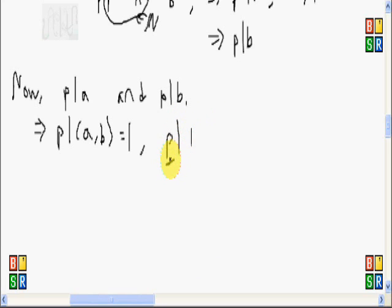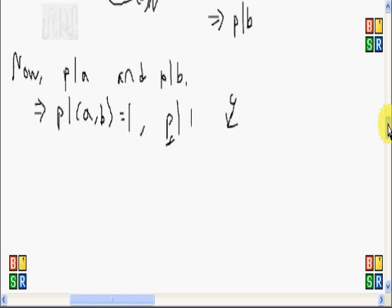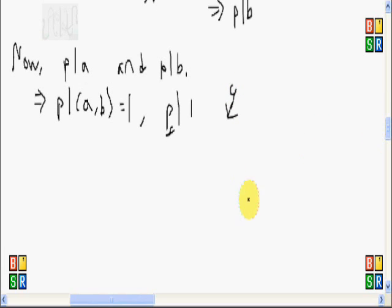But wait, p is a prime number and it divides 1. And that one is impossible. So whatever we do, we will arrive at a contradiction. So therefore, our assumption was false. So this is impossible.